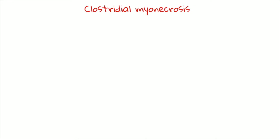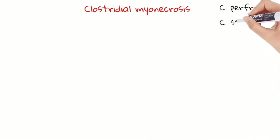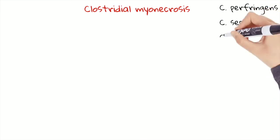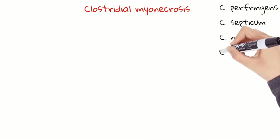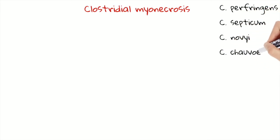This myopathy is due to an infection with different types of clostridia. The most common is Clostridium perfringens, but there are also other clostridia. They are all anaerobic bacteria and they produce toxins that damage tissues.